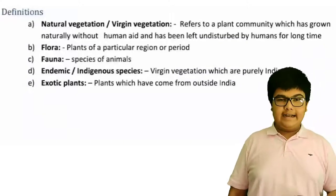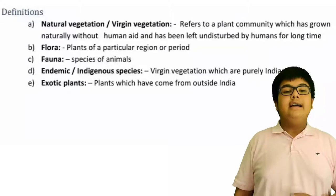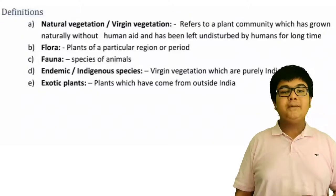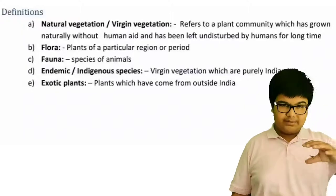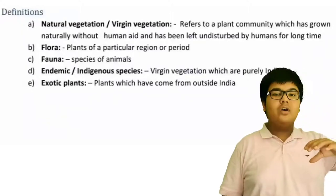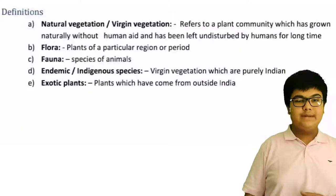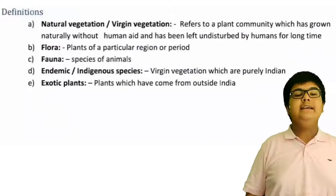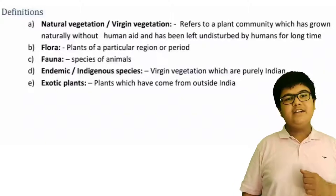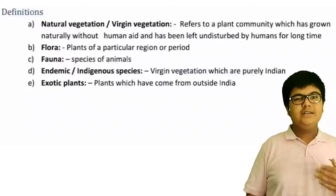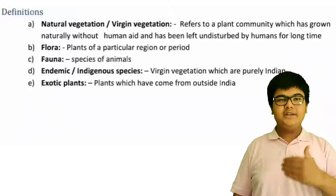Fourth, endemic or indigenous species. The virgin vegetation which is purely Indian is known as endemic species — vegetation found in a particular country. Fifth, exotic plants. These are the plants which have come from outside India, grown in foreign countries and then imported into India.